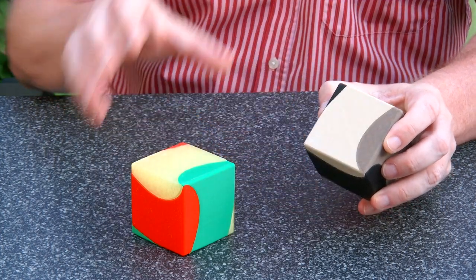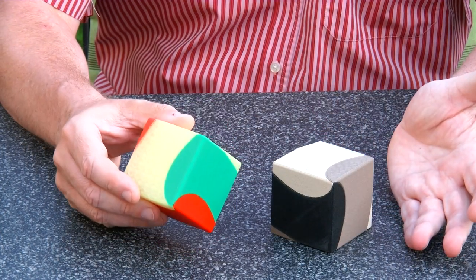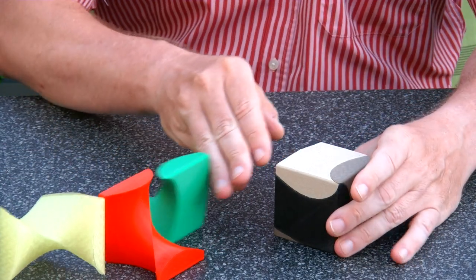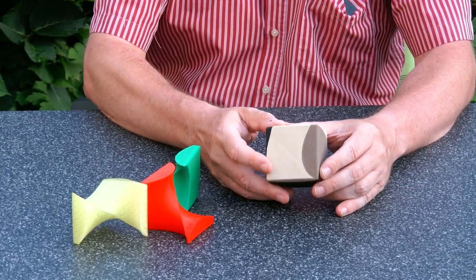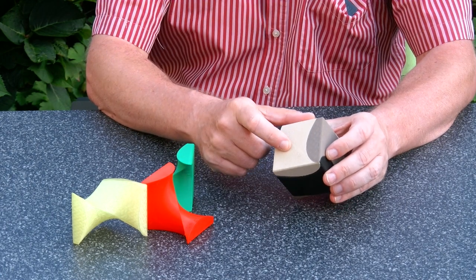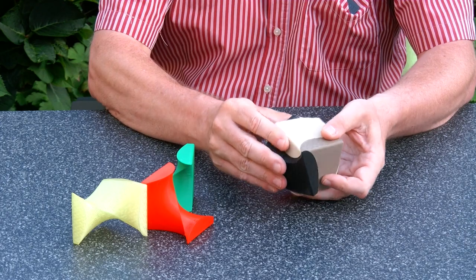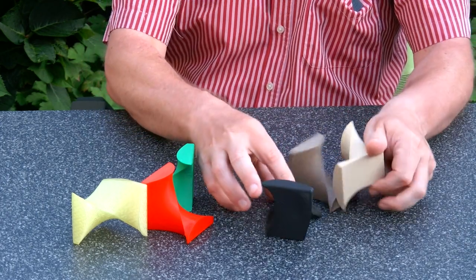So here we have the regular PLA version, plastic. And here we have the 3D printed wood version with birch, mahogany and black wood. So I like these three colors. And of course it's the same puzzle.